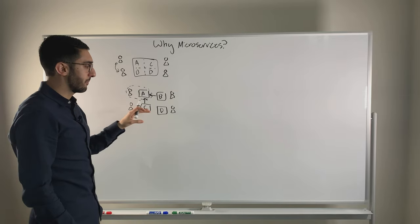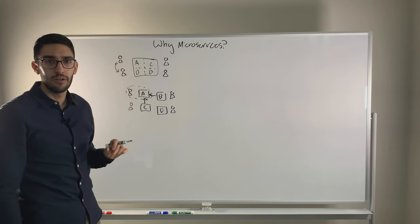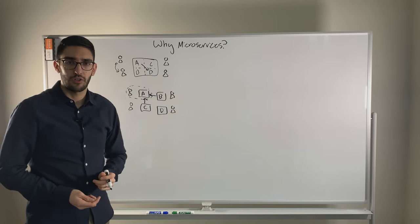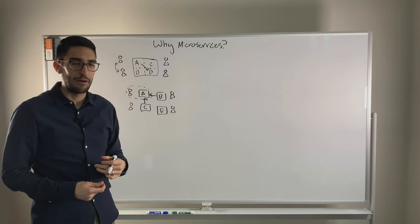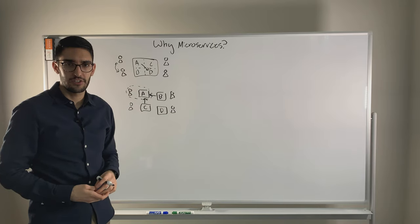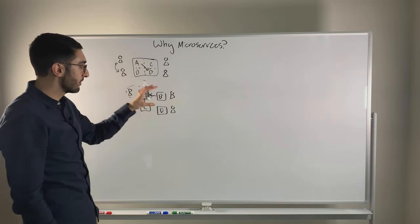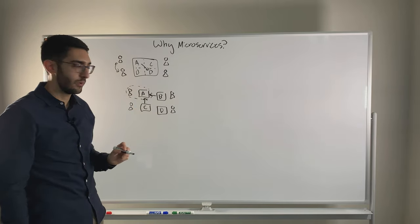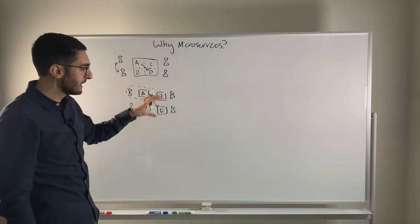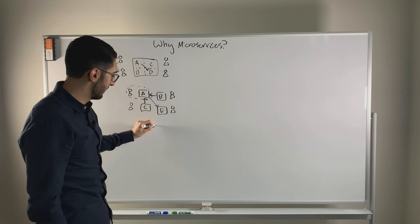At the same time, you inherit a set of operational challenges when you go to microservices. In a monolithic application, if A needed to interact with D, that was an in-memory function call — no network concerns, no authentication or authorization. But now you're a distributed system. You inherit challenges around how these pieces discover and communicate with one another. If A needs to communicate with D, how does it do that discovery? There's a whole set of service networking challenges.